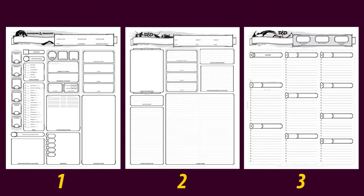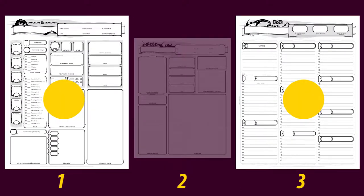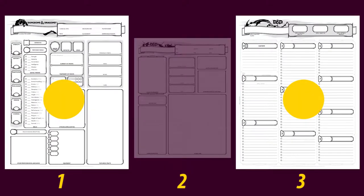Here's the full character sheet, consisting of three pages. You will actually only need these two pages, as the middle one only exists for things like narrative details, your backstory, and stuff you discover along the way — it works like a little notebook.